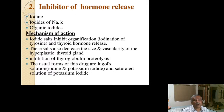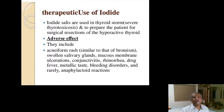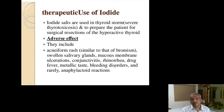Inhibitors of hormone release include iodine and iodides of sodium and potassium — these cause thyroid constipation. The most important is Lugol's iodine, given to reduce vascularity and decrease the size and function of the gland in preparation for surgery. Therapeutically, it is also used in thyroid storm and severe thyrotoxicosis. Adverse effects of Lugol's iodine include rash similar to bromism, swollen salivary glands, mucous membrane ulceration, mouth ulcers, conjunctivitis, rhinorrhea, drug fever, metallic taste, bleeding disorders, and rarely anaphylactoid reactions.